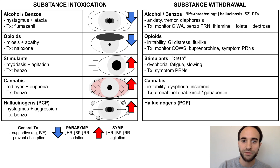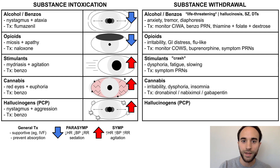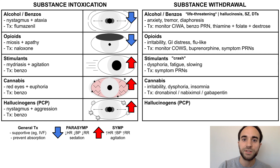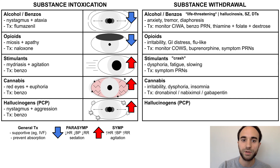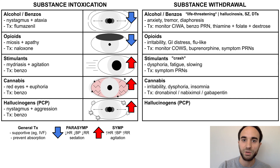Cannabis withdrawal involves irritability, dysphoria, and insomnia, among other symptoms. Treatments with some evidence for easing withdrawal include the THC derivatives dronabinol and nabixamols, as well as gabapentin.